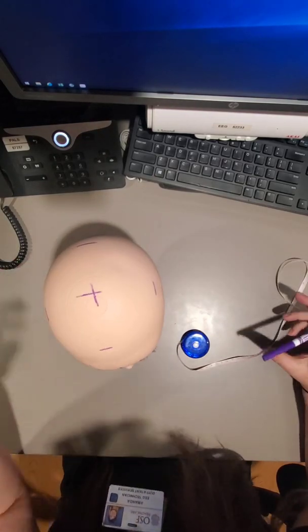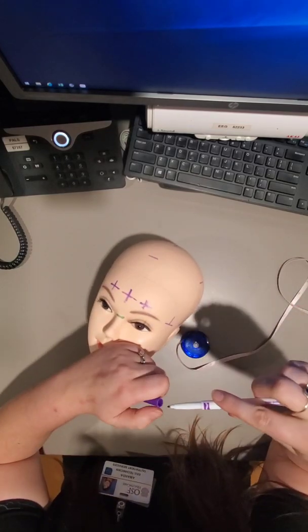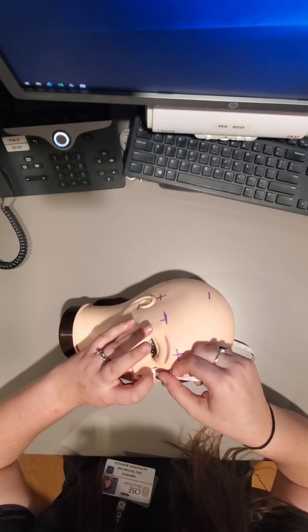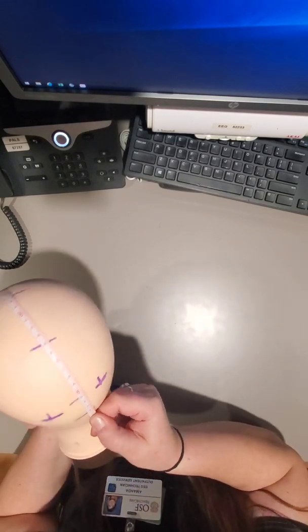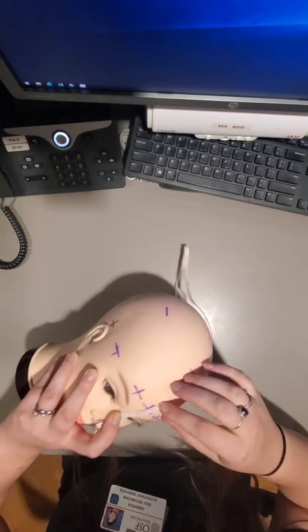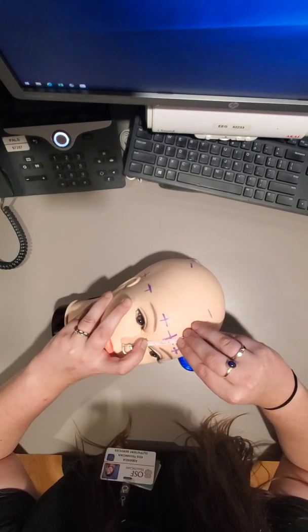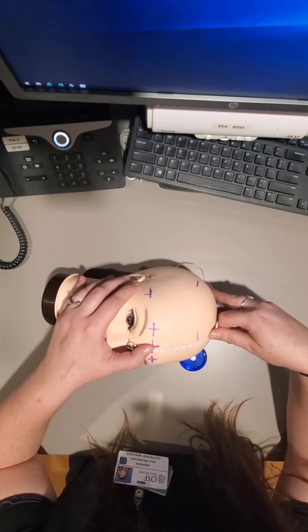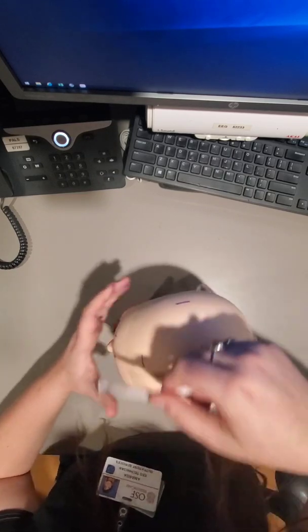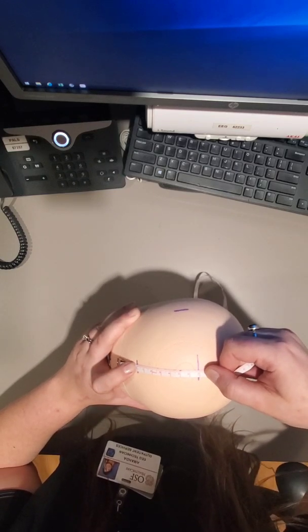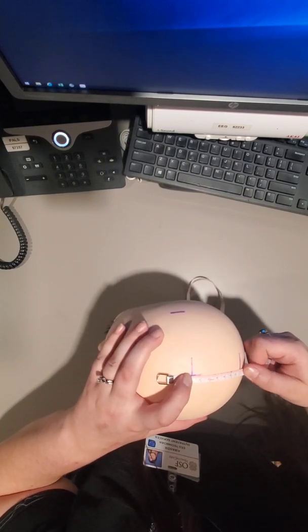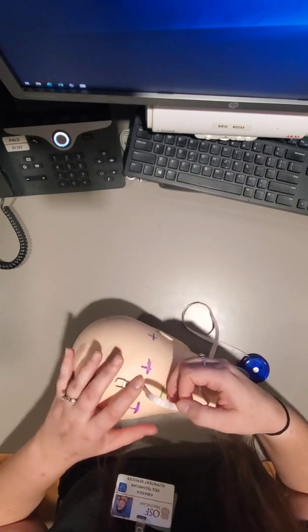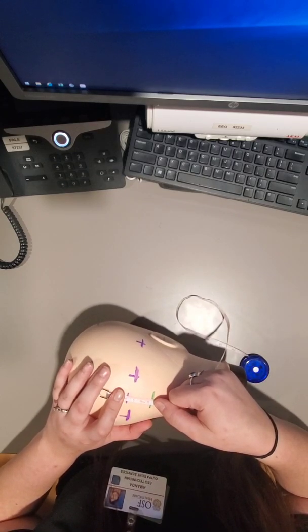Now it's the circumference, the pre-auricular, and the nascent. And then I'm going to go over my measurements. Nascent to inion, 34. So then nascent to FPZ will be 3.4. FPZ to FZ, 6.6. FZ to CZ, 6.8. CZ to PZ, 6.9. PZ to OZ, 7. OZ to the inion, 3.3.